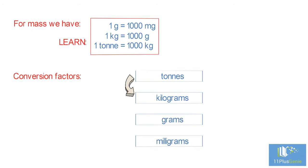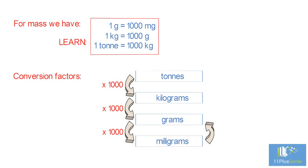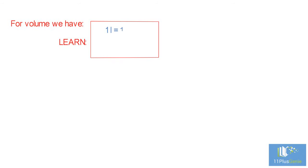To convert tons to kilograms, we times by 1000. To convert kilograms to grams, we times by 1000. To convert grams to milligrams, we times by 1000. The opposite is true: to convert milligrams to grams, we divide by 1000. To convert grams to kilograms, we divide by 1000. To convert kilograms to tons, we divide by 1000.